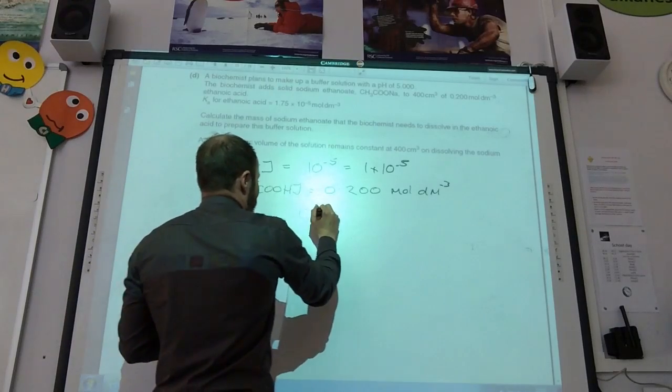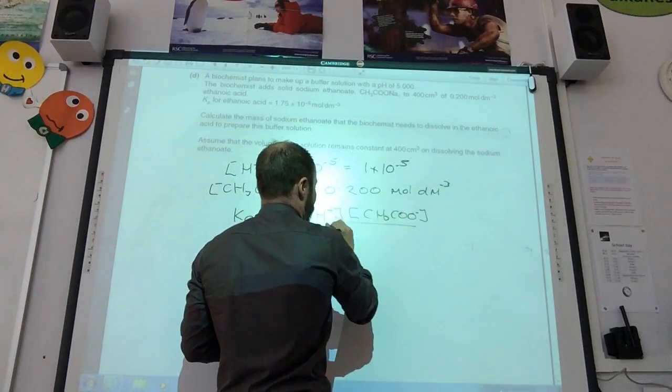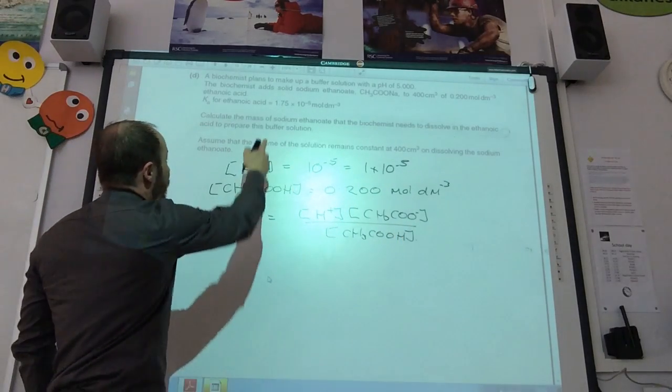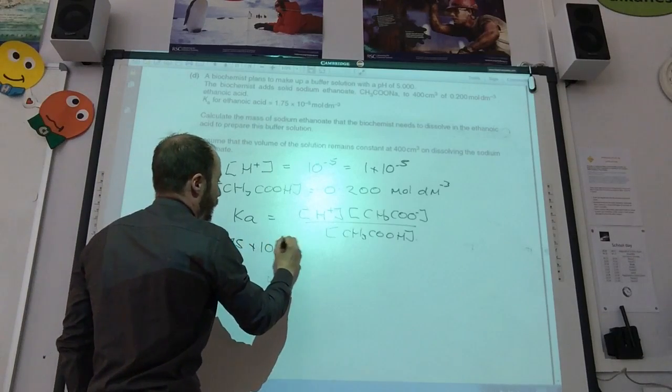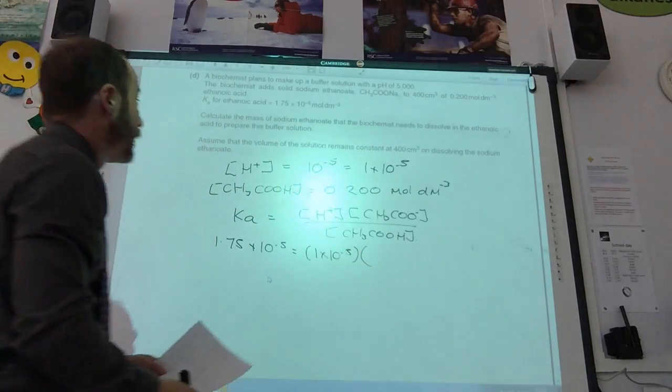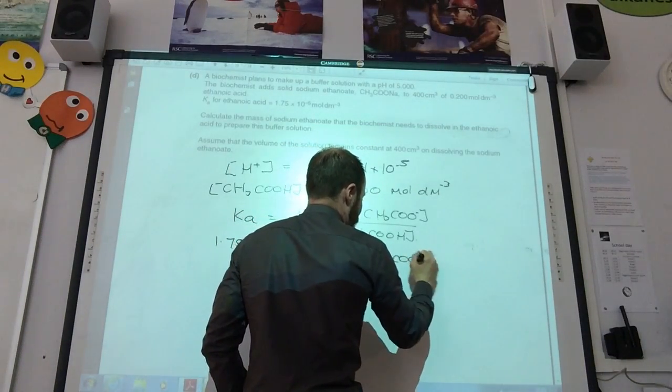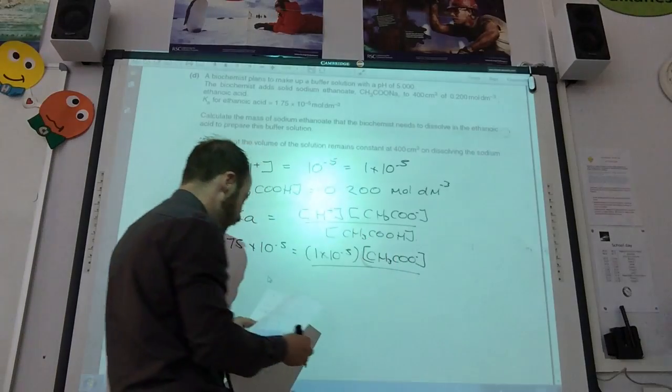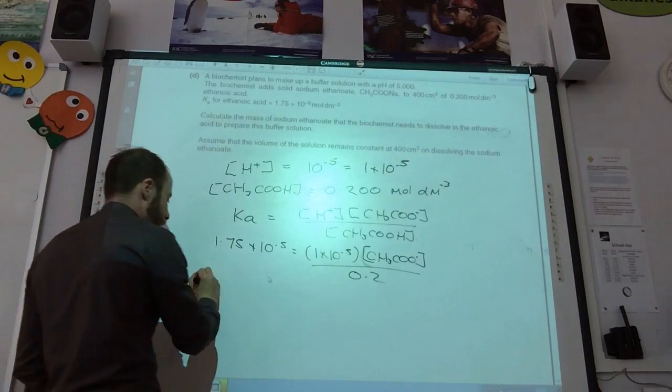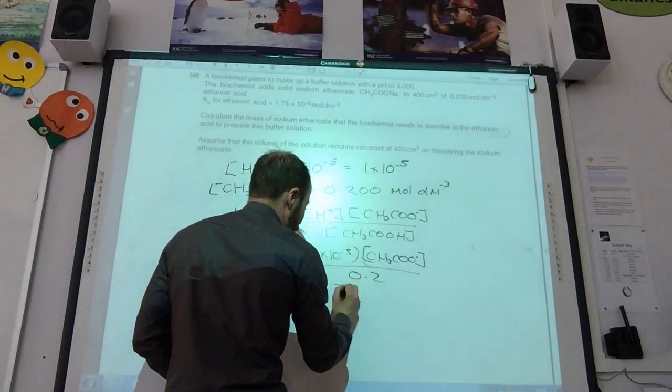I can now work out my concentration of ethanoate. Ka is equal to concentration of H+. Ka is 1.75 times 10 to the minus 5. Concentration of H+, we've worked out. Concentration of ethanoate is what I want to find out. Concentration of ethanoic acid we've been told is 0.2. If you rearrange that, your concentration of ethanoate comes from 0.35.